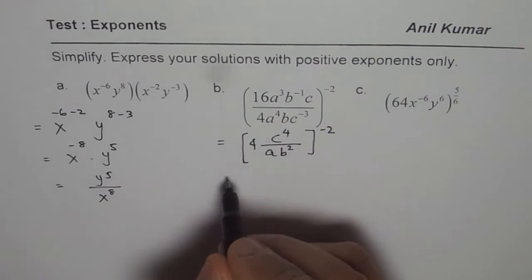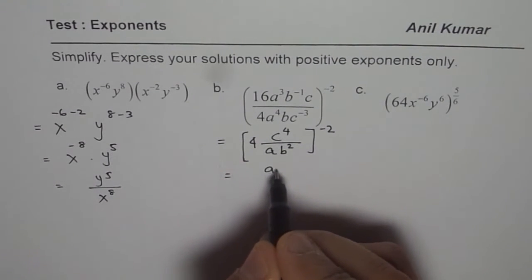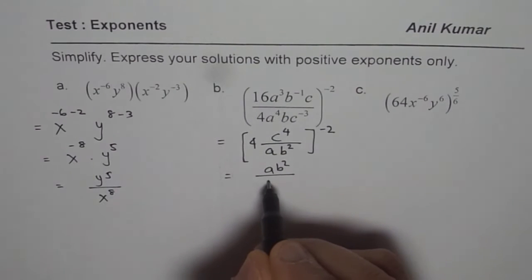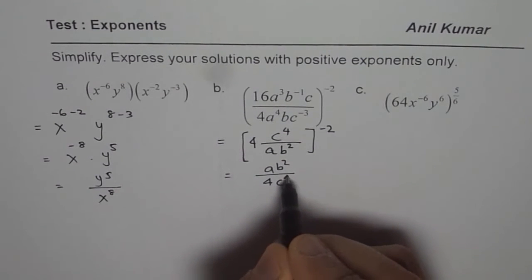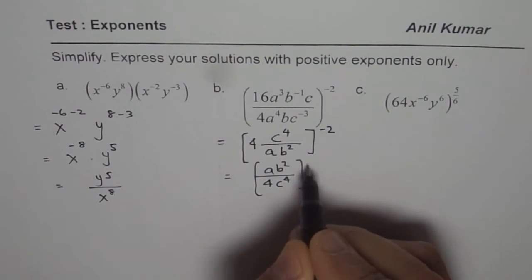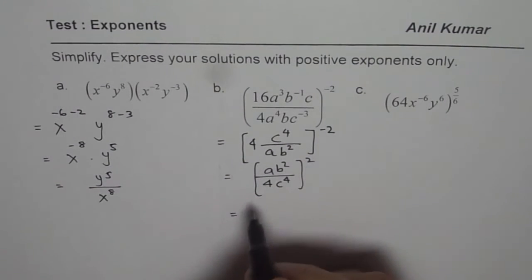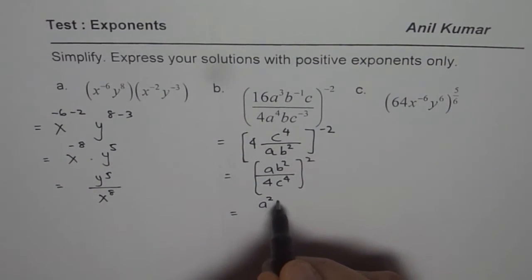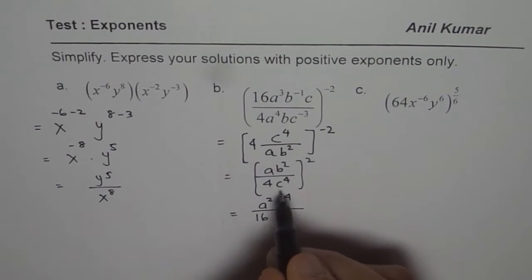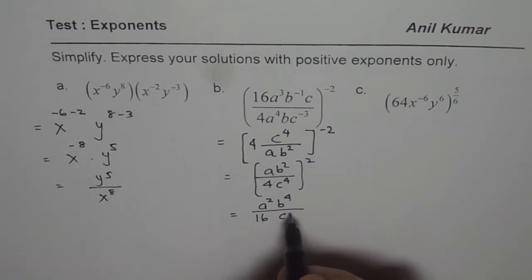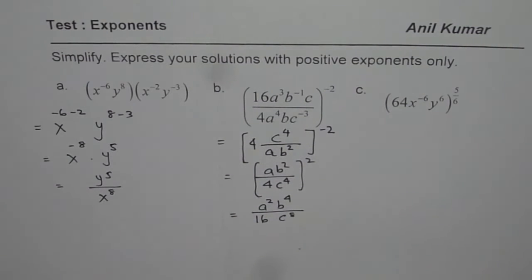The negative exponent means reciprocal, so we can write this as (ab² / 4c⁴)². Now every exponent gets multiplied by 2. We get a² b⁴ over 16 c⁸. That is how we simplify it.